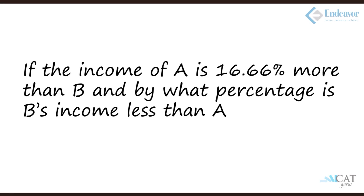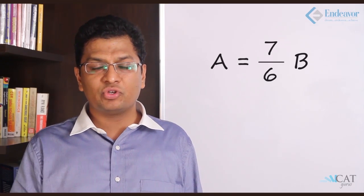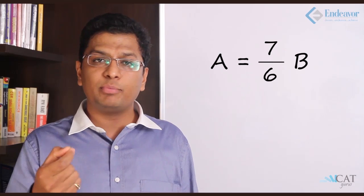If the income of A is 16.66% more than B, what percentage is B's income less than A? A's income is 16.66% more than B. So 16.66% more, that is 1 upon 6, and more will give me one more which is 7 upon 6. So can I say that A is equal to 7 upon 6 B?